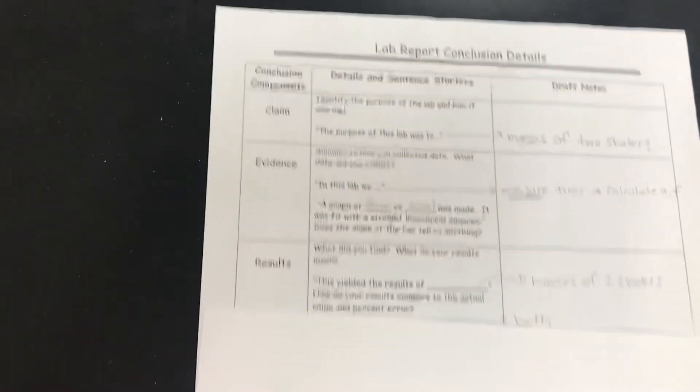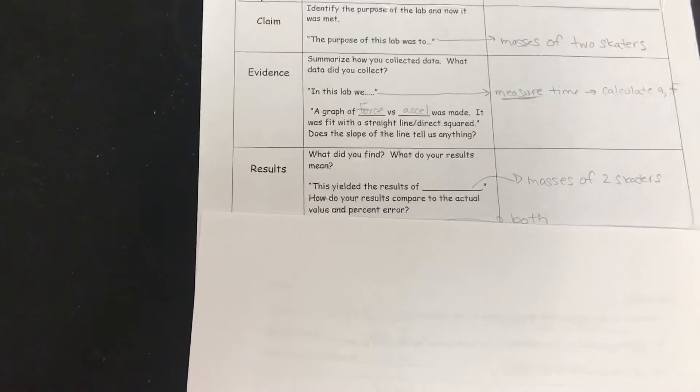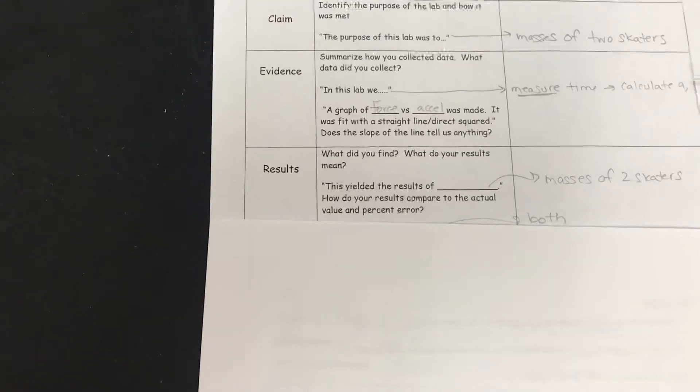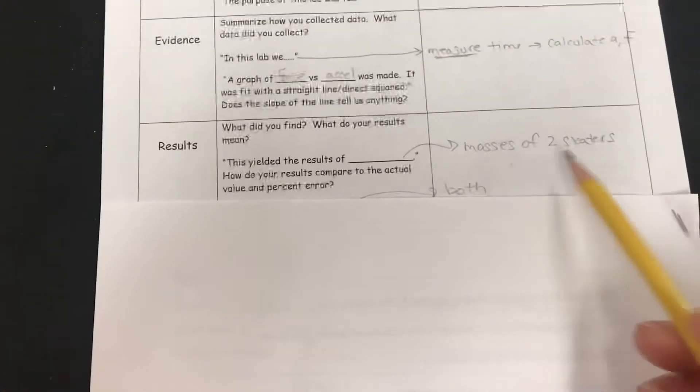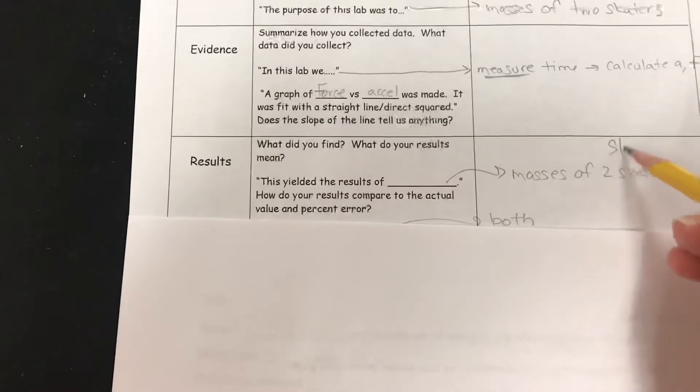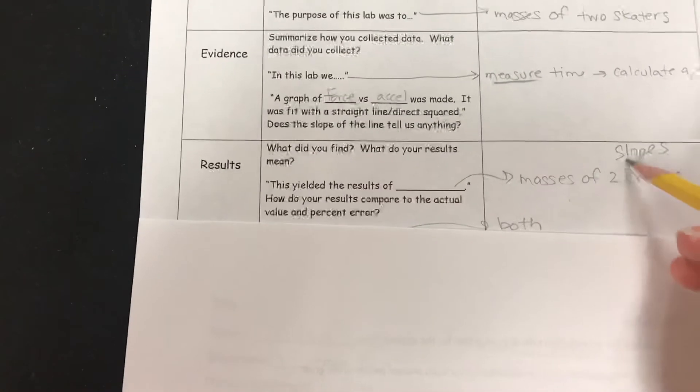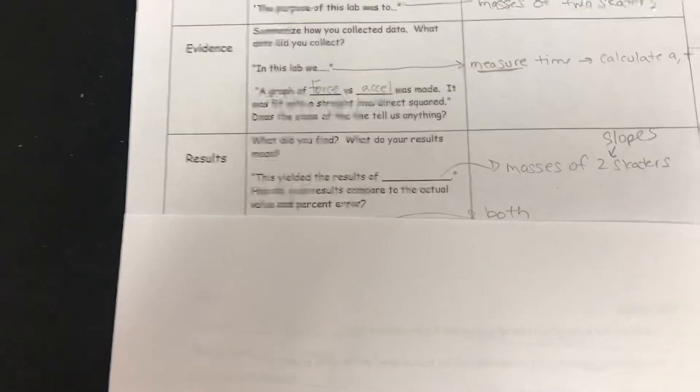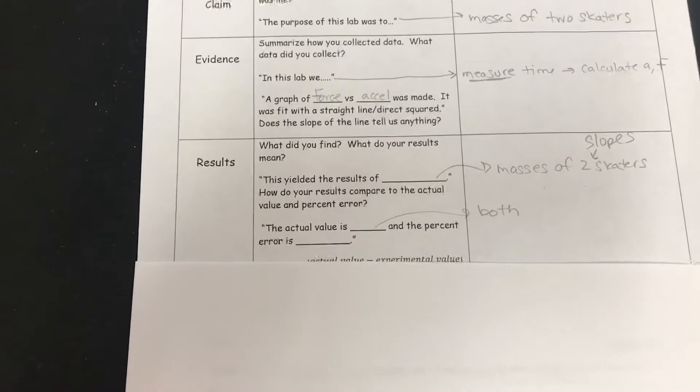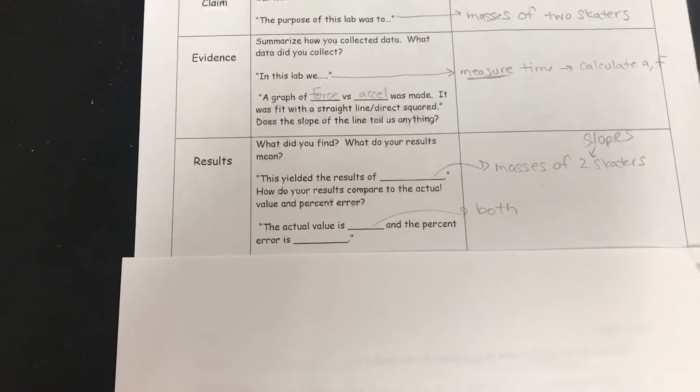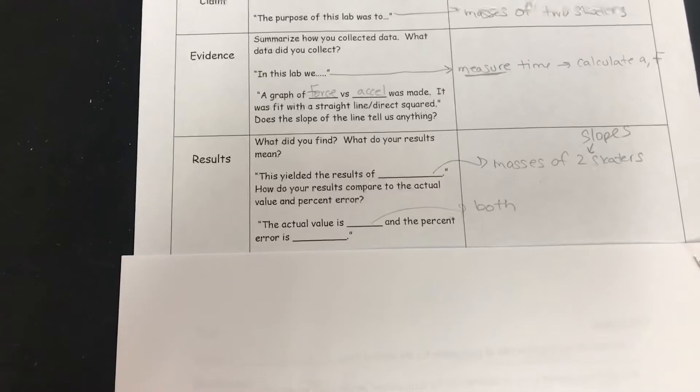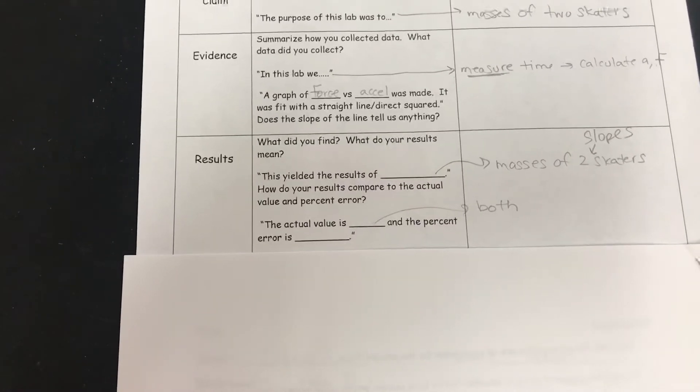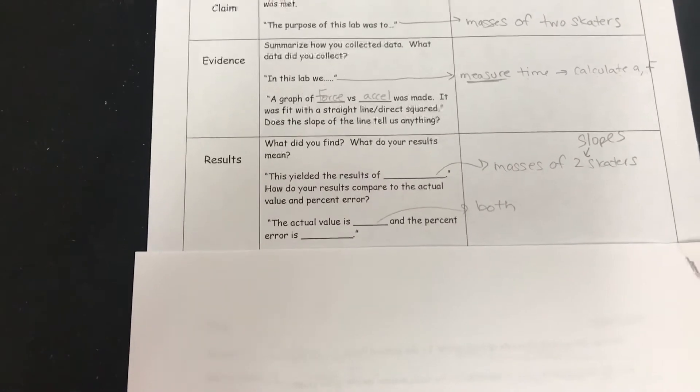Now the slope of the graph, this yielded results of, and these should be our masses of the two skaters. And again, these are the skaters' slopes. The actual value of each skater and the percent error, and that should be from your table on the previous page.